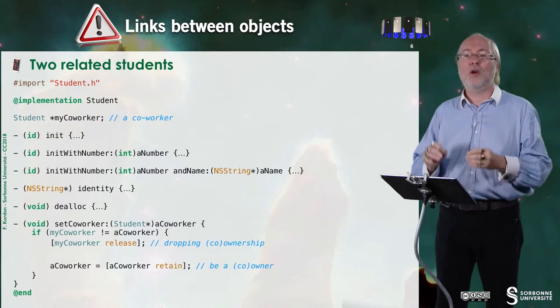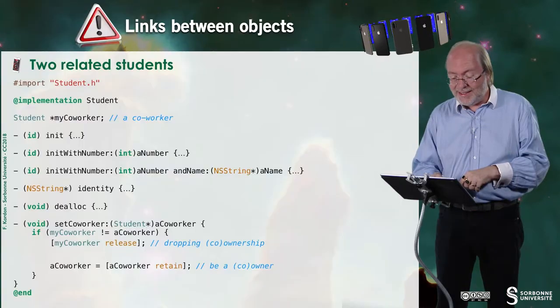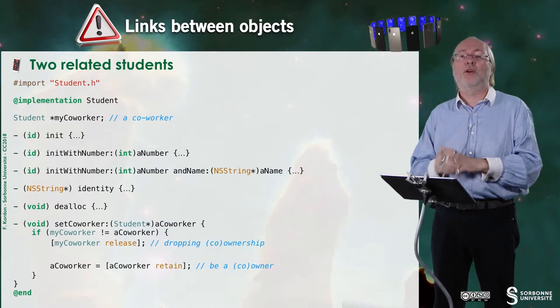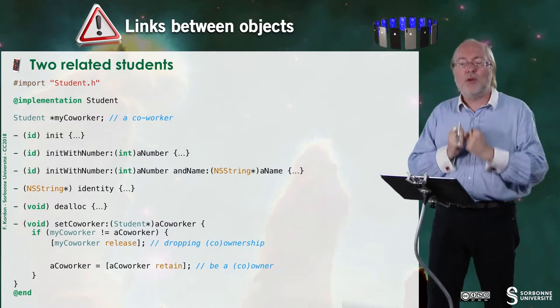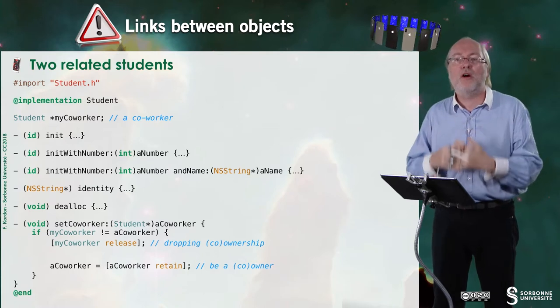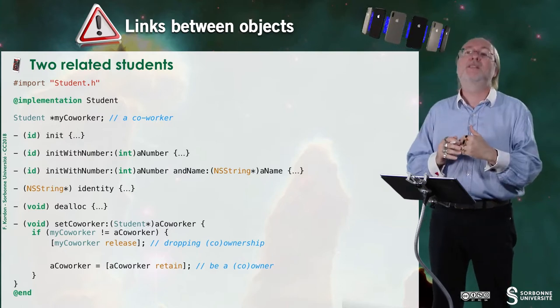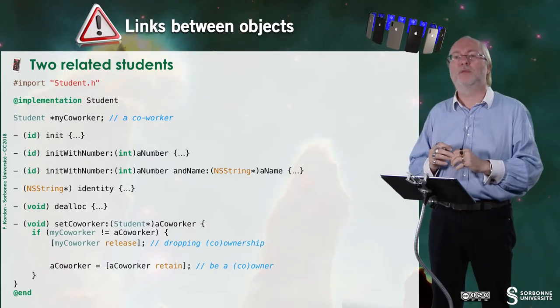I have to do this. I have to do my co-worker equal to a co-worker retain. So it makes exactly the same as the previous instruction but it increments the reference counter. I say, I want a reference to your object but I need to be a co-owner of this object so that if you decide to drop the object, the object is still there for me. So if you decide to destroy this object, it will still remain for me while you have dropped it.